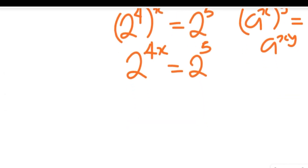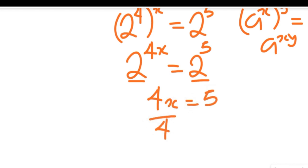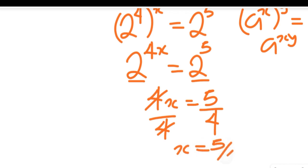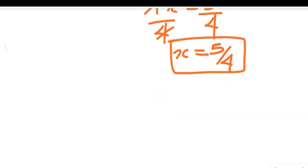Since the bases are the same, we equate the exponents. So 4x equals 5. Dividing both sides by 4, we have x equal to 5 divided by 4, which is the solution to that exponential equation.